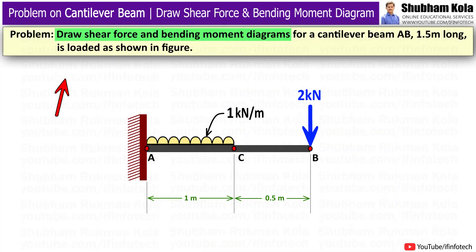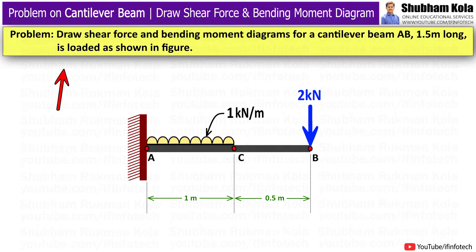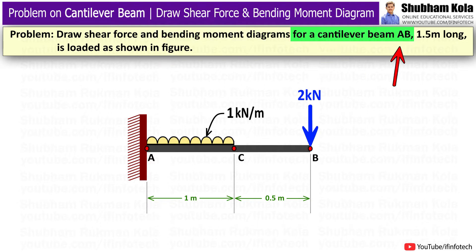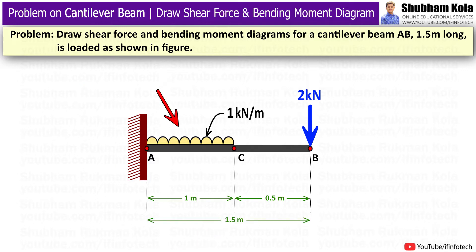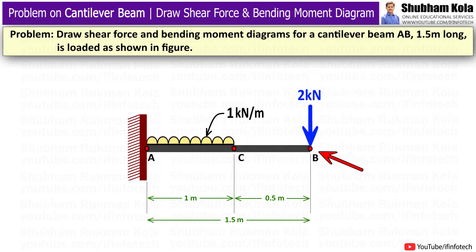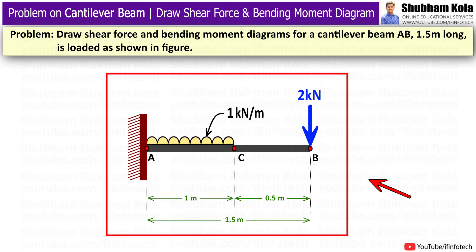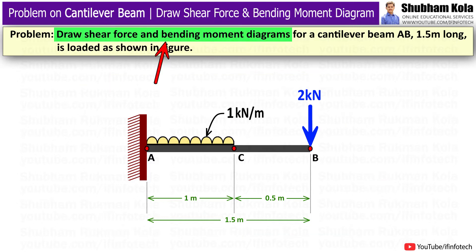In this video, we are going to learn how to draw a shear force diagram and bending moment diagram for a cantilever beam as shown in figure. The statement is: draw a shear force and bending moment diagram for a cantilever beam AB, 1.5m long, loaded as shown in figure. The beam carries a uniformly distributed load of 1kN per meter over a length of 1m, and a point load of 2kN acting at point B. For this setup, we have to draw shear force and bending moment diagrams.